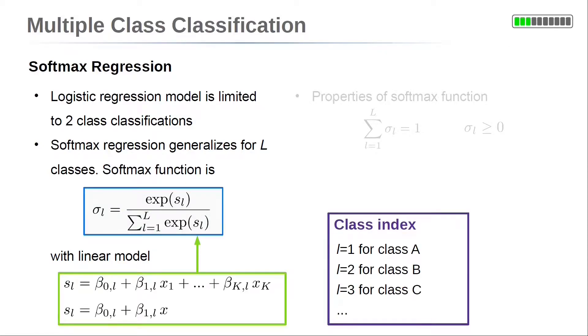The softmax regression uses one individual linear model per class, denoted by s_l. So l refers to the class. The linear model itself can be the one-dimensional linear model we used before with a single independent variable x. In more general, it can be the multi-dimensional linear model with K input variables x_1, x_2 up to x_K.